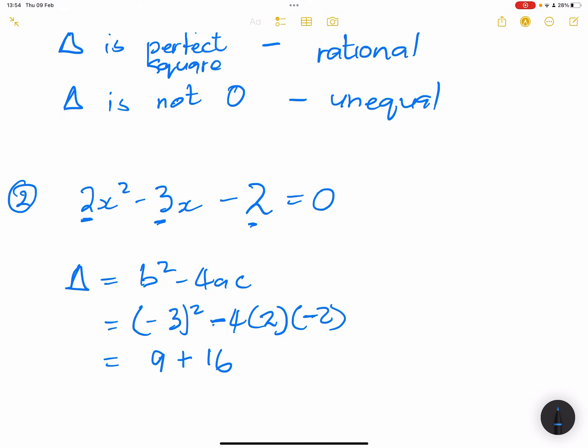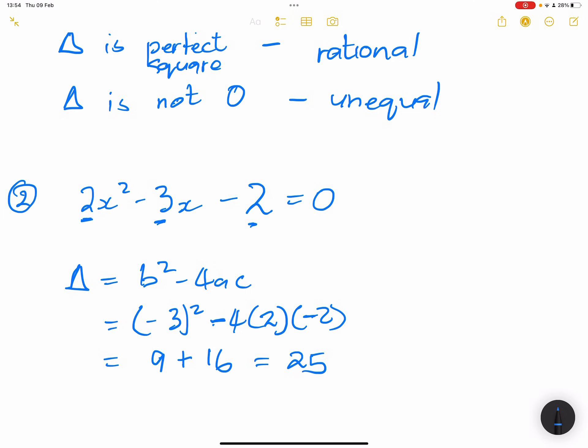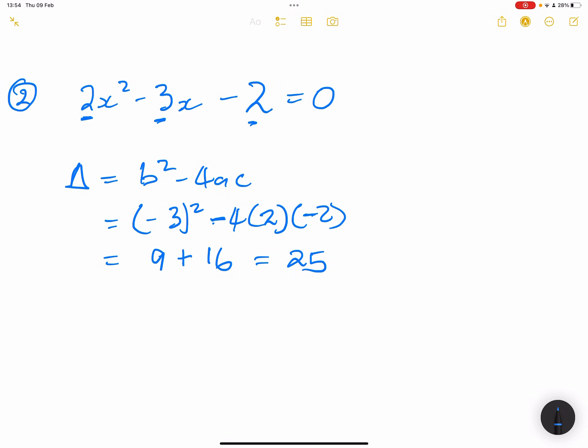This will give us 25. So once again, what do we notice? We know that delta is greater than zero. So what does that tell us about roots? We know that roots are real, so these are real roots.